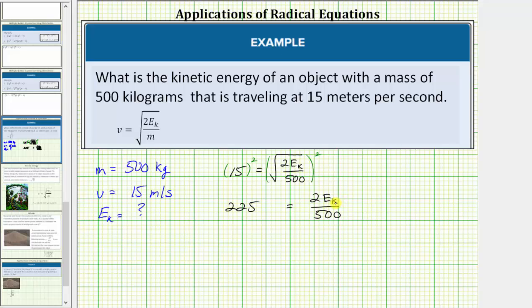And now to solve for E sub k or the kinetic energy we could multiply both sides of the equation by the reciprocal of two over 500. But instead let's clear the fractions by multiplying both sides of the equation by 500.